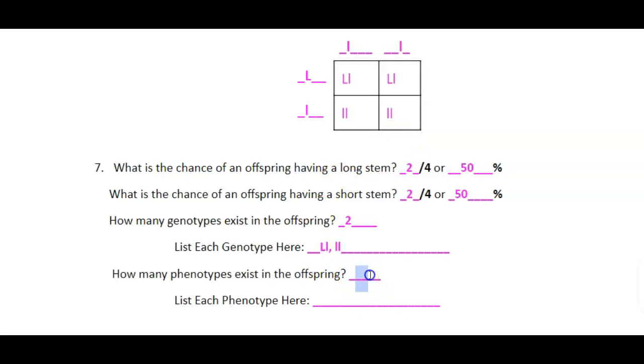And then how many phenotypes? Phenotypes are physical appearances. So what are my offspring going to look like? Well, two of them are going to have long stems. Two are going to have short stems. So that's two different options there, long stem or short stem. And I'm going to write that down here, long stem, short stem.